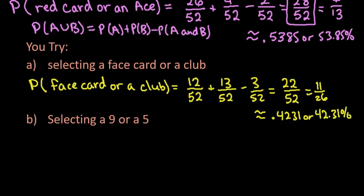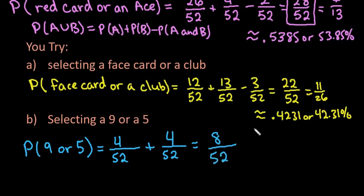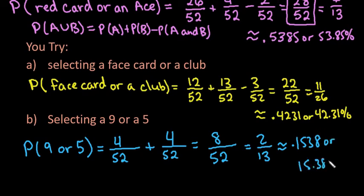For the probability of selecting a 9 or a 5: there are four 9s out of 52 and four 5s out of 52. Because these cannot overlap, we do not subtract. Adding them gives 8 out of 52, which simplifies to 2 over 13, or approximately 0.1538, or 15.38%. Depending on your homework platform, they may ask for decimal, percent, or fraction form — all are acceptable.